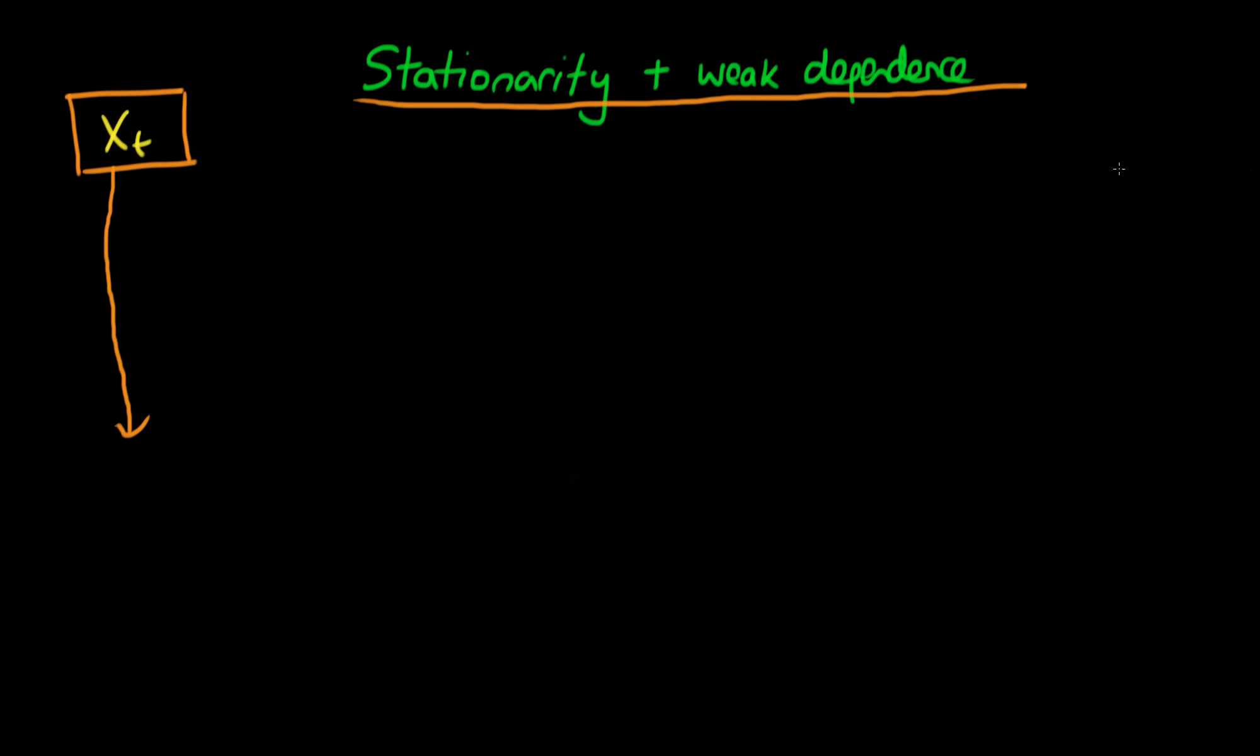The idea with a time series process is that we don't actually see the values which that process outputs for all time. We only see the values at a given point in time, so we see what we call realizations of that particular process.